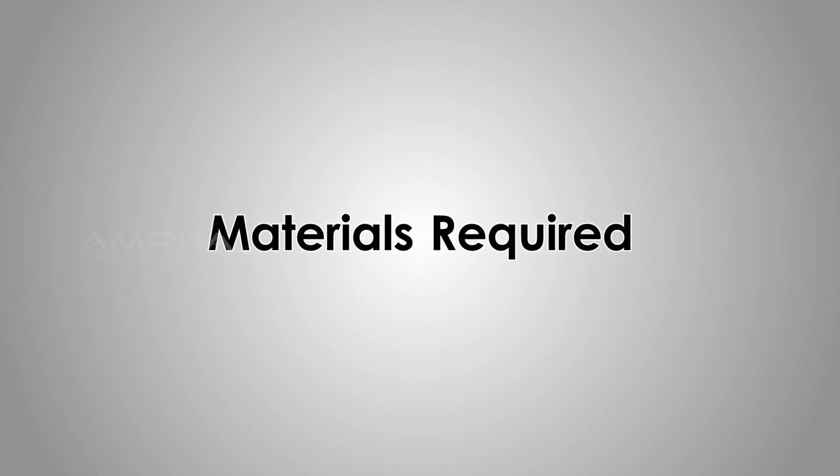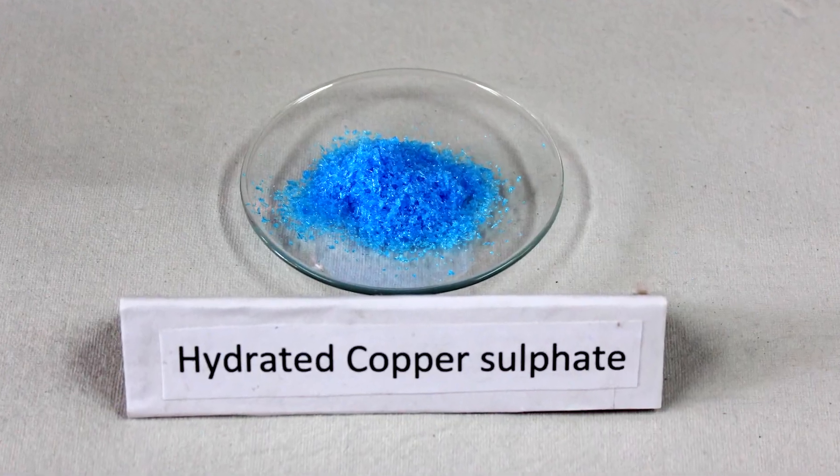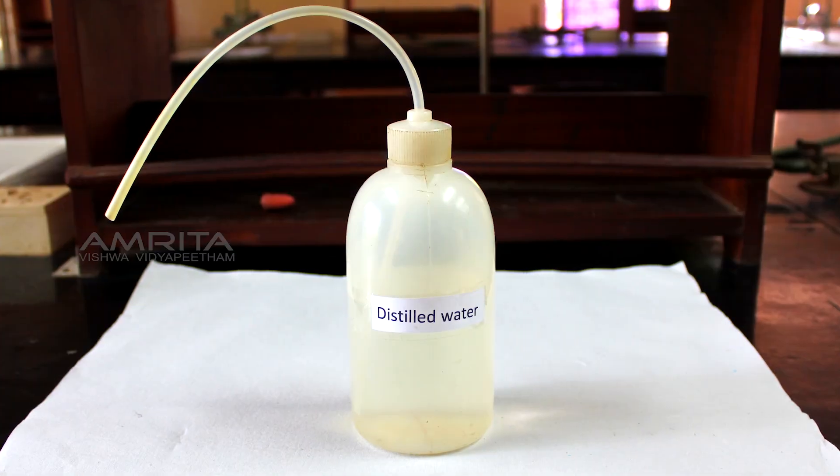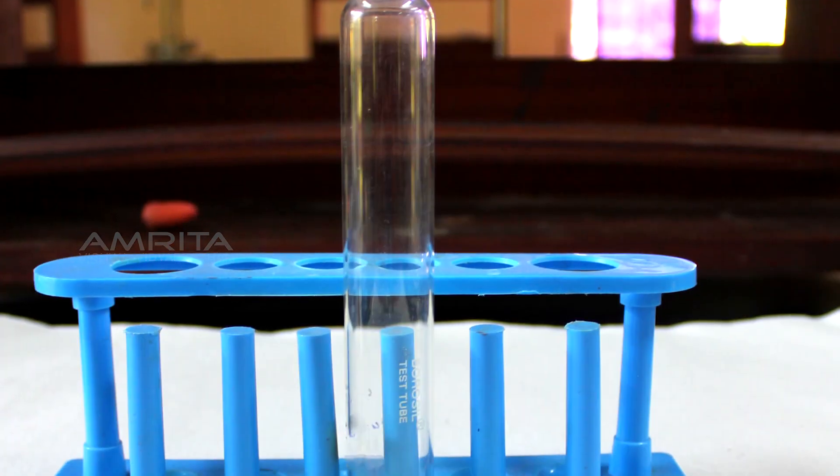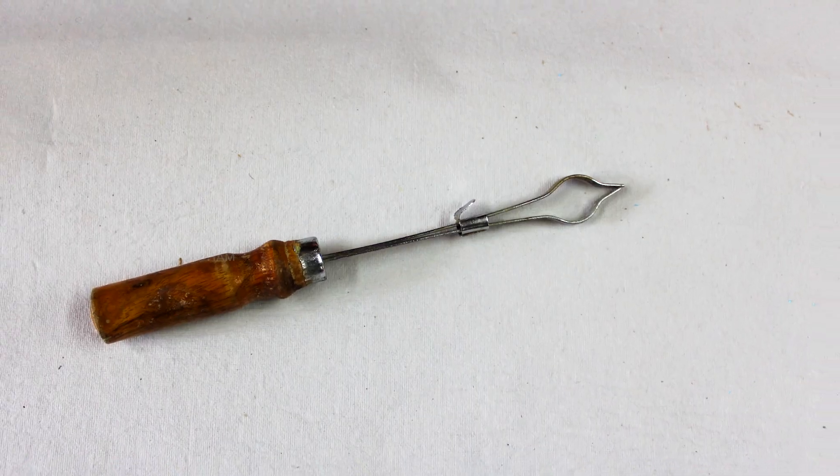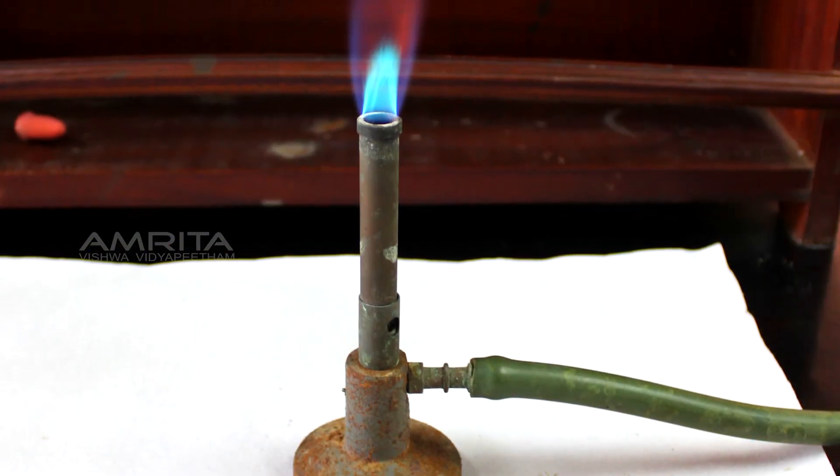Materials Required: Hydrated copper sulphate crystals, distilled water, boiling tube, spatula, test tube holder and Bunsen burner.